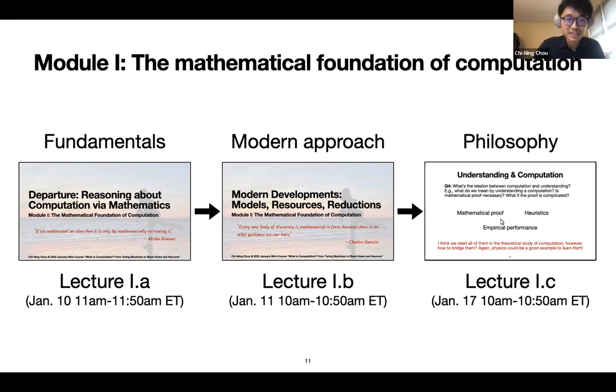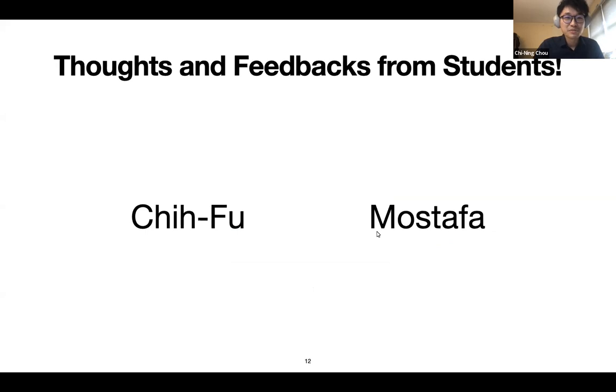In the philosophy lecture, we talked about the philosophy of computation, and also talked a little bit about my view - maybe we need to distinguish theoretical computer science from the theory of computation. We also talked about the potential advantage of merging different understandings like mathematics, heuristics, and experiments together - maybe all together can help us shape a better understanding in computation. Now I'm going to invite two of our students in the audience to share their thoughts. The first one will be Chifu and then Mustafa.